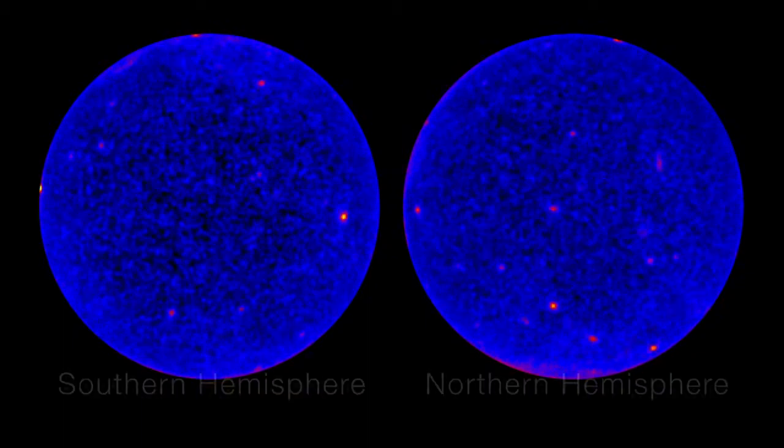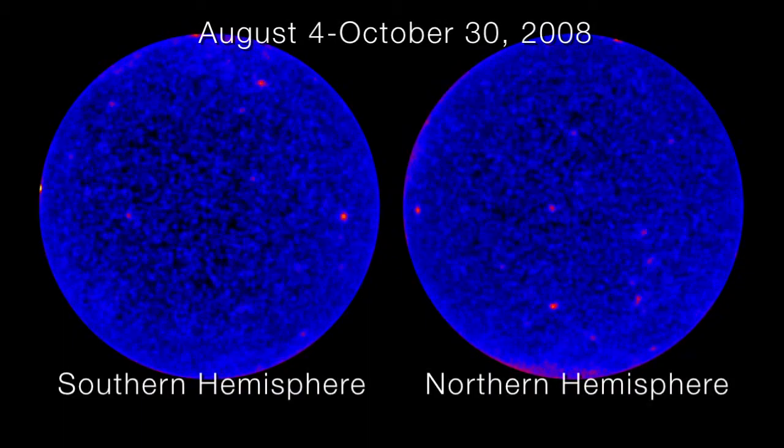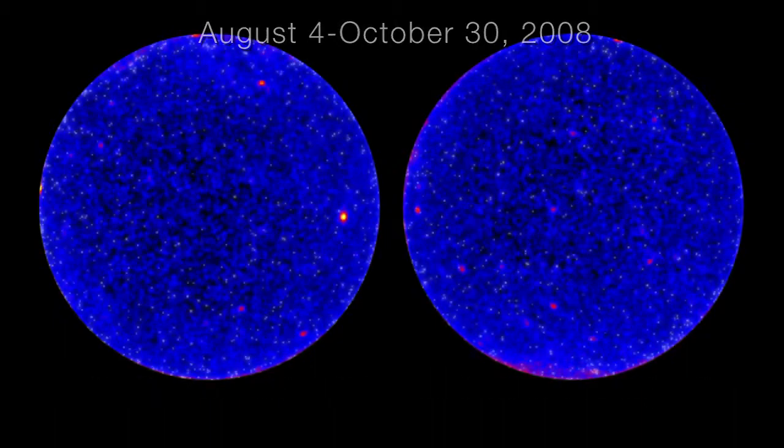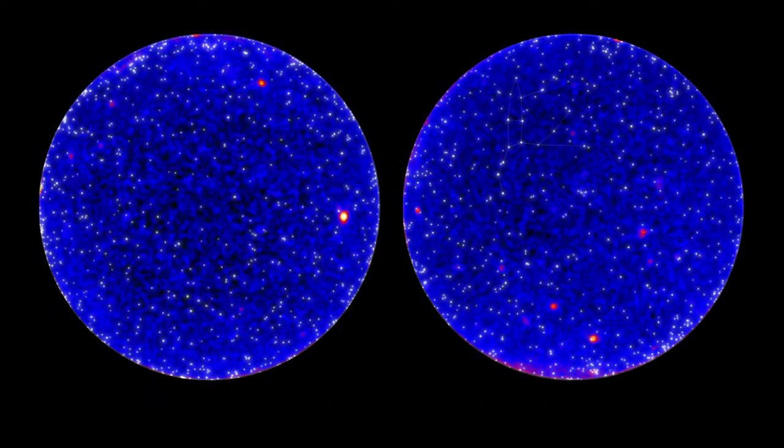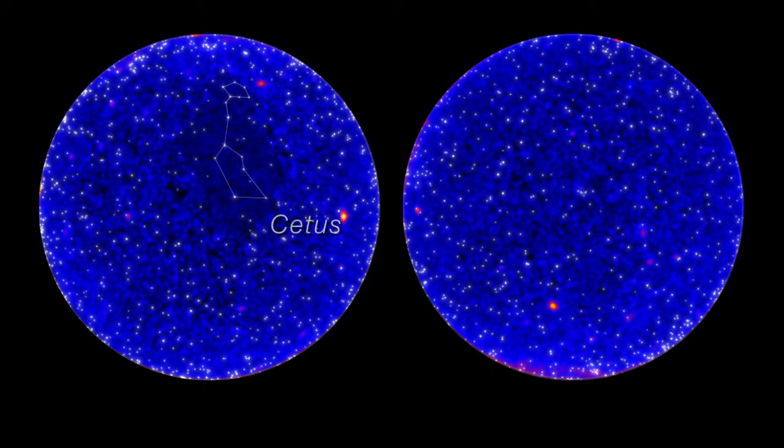Fermi has found about a thousand gamma ray blazars so far. Every day, the gamma ray sky changes depending on which galaxies are in outburst and which are in a quiet phase. Because we're watching them all the time, we can track their activity and alert other telescopes to new flare-ups.